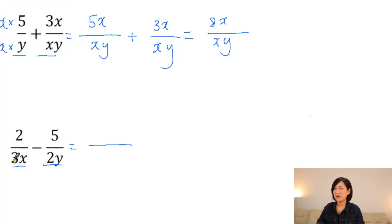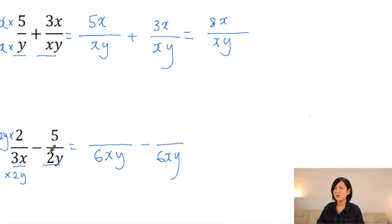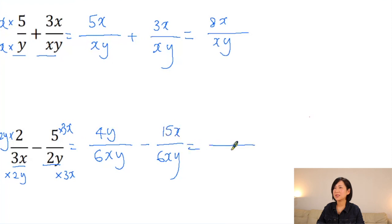For the next one, the common denominator is 6xy — that's 3 × 2, x × y. To make 3x into 6xy, multiply by 2y, then do the same to the numerator. To make 2y into 6xy, multiply by 3x, then do the same to the numerator. Calculate: 4y − 15x over 6xy. There are no like terms here, so that's the end of the simplification.